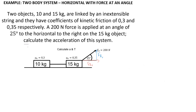We start by drawing a free body diagram for each object. For the 10 kilogram object, there is a force of gravity acting downward. Since it is on a surface, there will be a normal force acting upward. There is a tension force acting to the right, and since we have been given a coefficient of friction, there is a frictional force acting to the left.